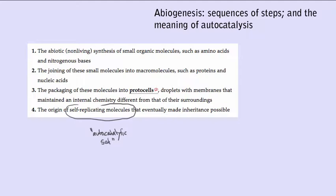But we've gotten ahead of ourselves. Before we can talk about the origin of autocatalysis we have to first account for the abiotic synthesis of macromolecules like proteins and nucleic acids, and in order to do this we need some mechanism for the generation of organic small molecules like amino acids and nucleotides that would be necessary as the building blocks for proteins and nucleic acids. These are steps 1 and 2 in both Campbell's as well as my speculative walkthroughs for the abiotic origin of cellular life.